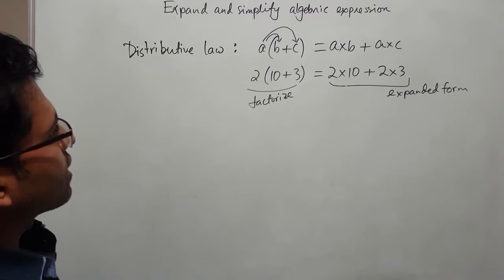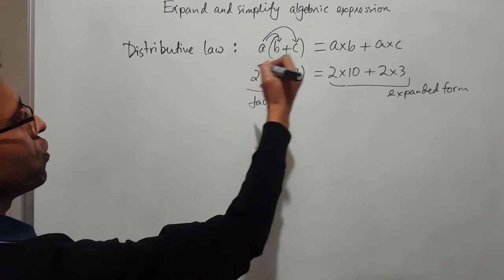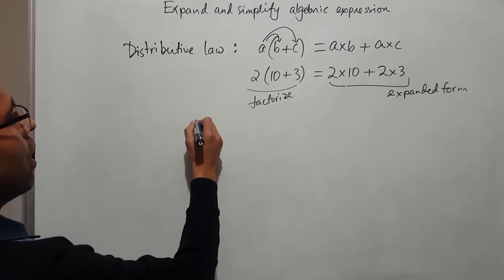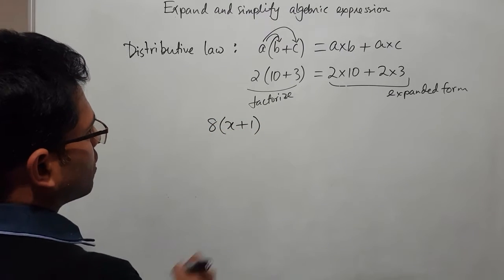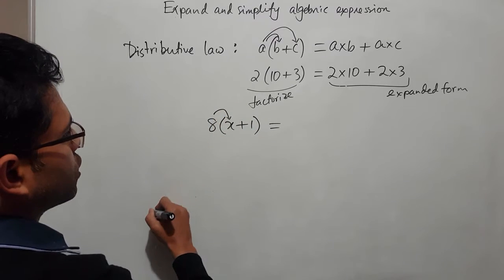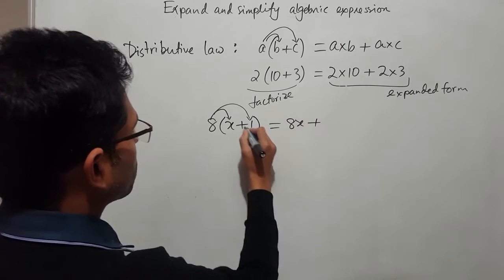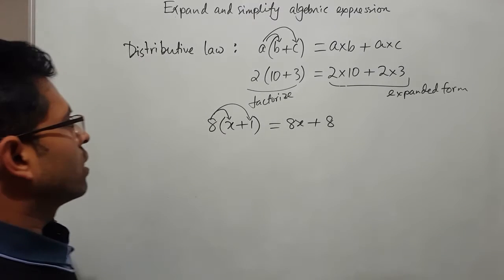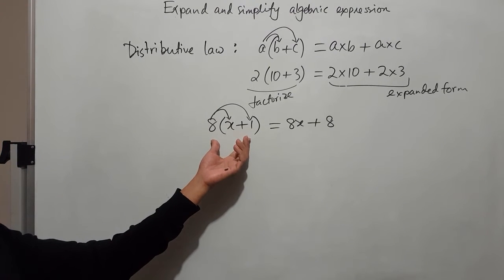Let's start with an example of an algebraic expression that we need to use the distributive law to make the expanding. For example we have 8 of x plus 1. If I ask you to expand it, we just need to use the distributive law. So 8 times x which is 8x, then 8 times 1 is 8. So we are expanding the bracket using distributive law.